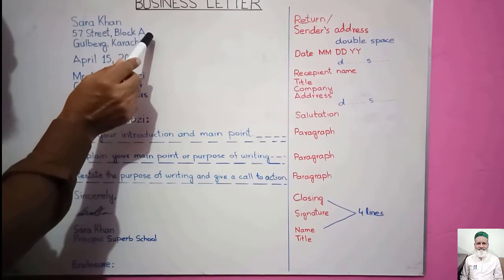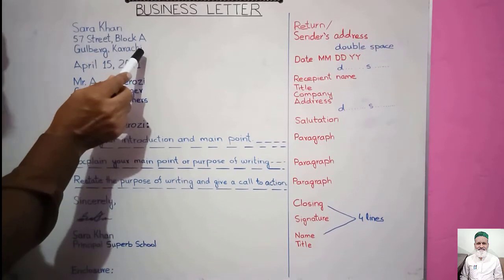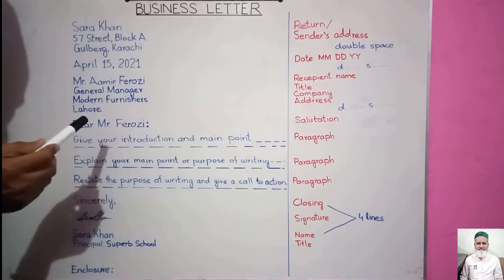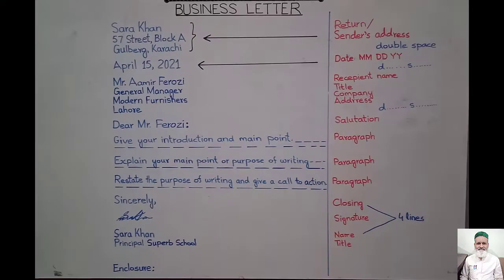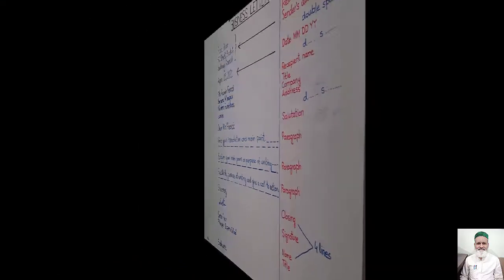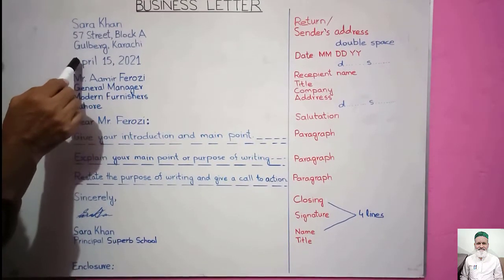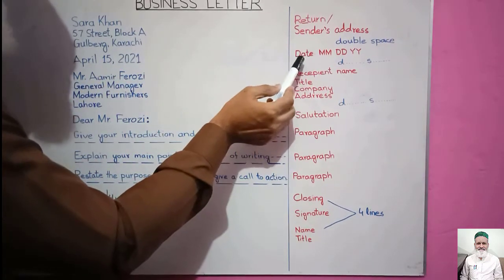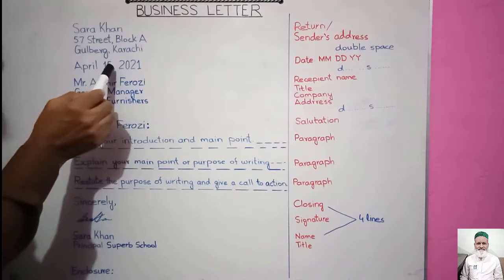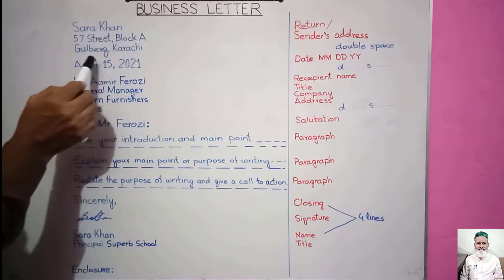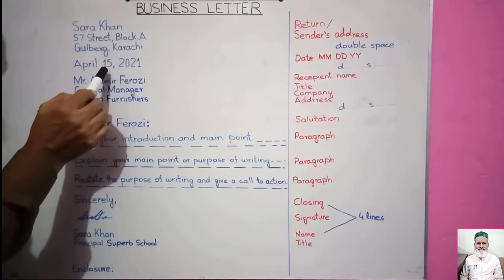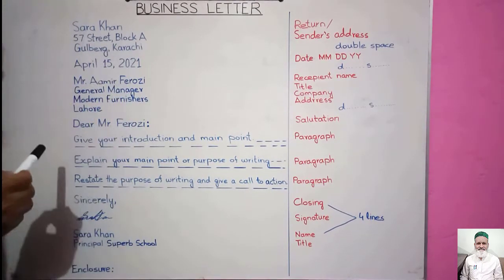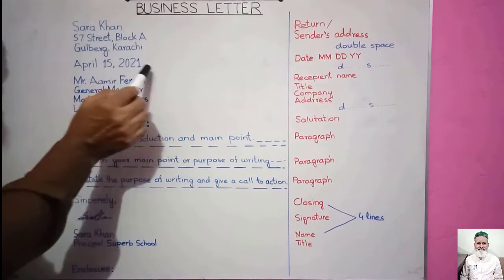Regarding spacing: when the first section, i.e., the Sender's address, is complete, we give a double space — meaning we leave one blank line in between — and then we write the date. The pattern for writing the date is: first we write the month, then the day, and then the year. A comma is placed before the year, for example 'April 15,' then a comma, and then the year '2021'. After the date, again we leave one line — that is, double spacing.